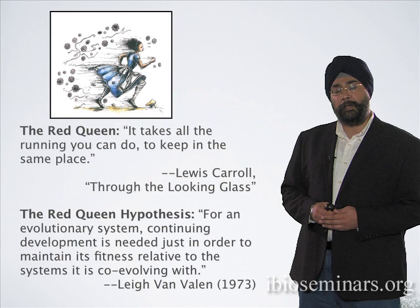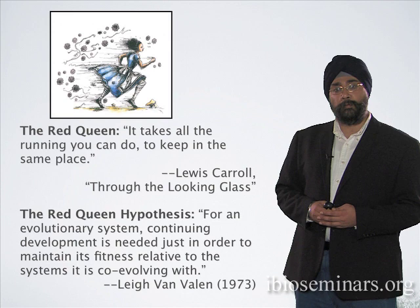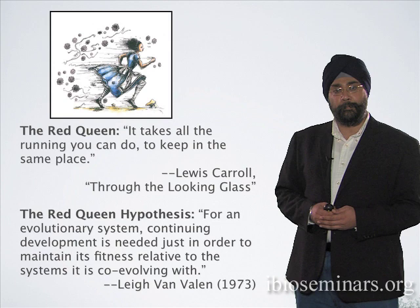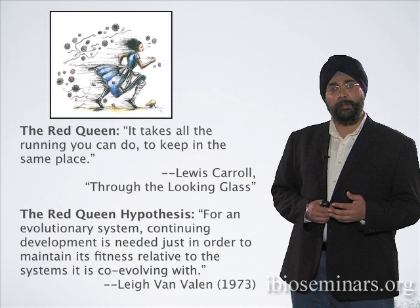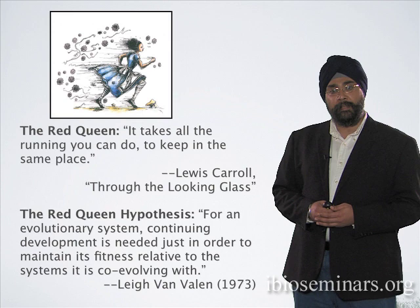The work in the field of molecular arms races is really inspired by the character the Red Queen, introduced by Lewis Carroll in his book Through the Looking Glass. The Red Queen tells Alice that it takes all the running you can do to keep in the same place. Very much the same idea was adopted by the evolutionary biologist Lee Van Valen as the Red Queen hypothesis.